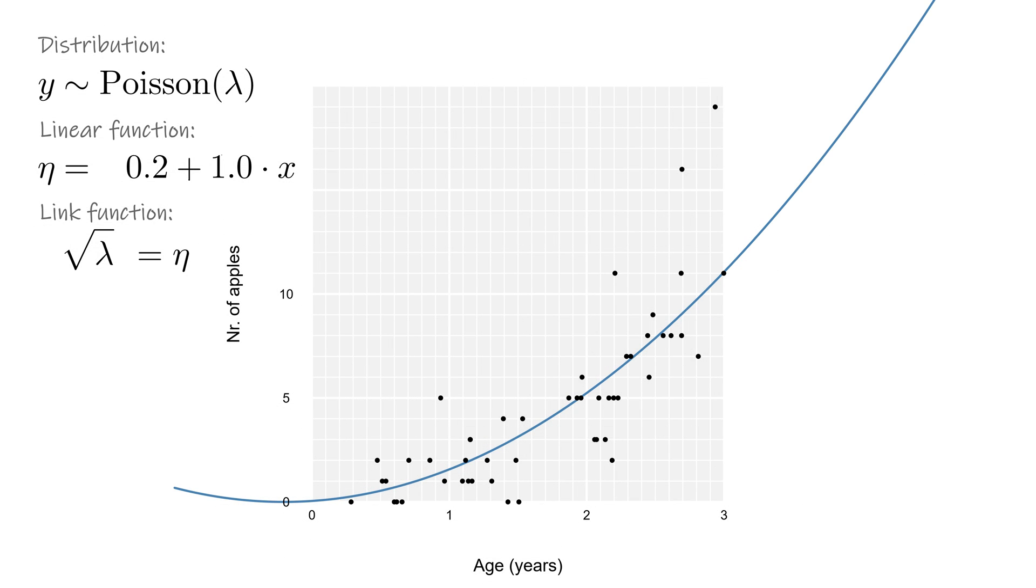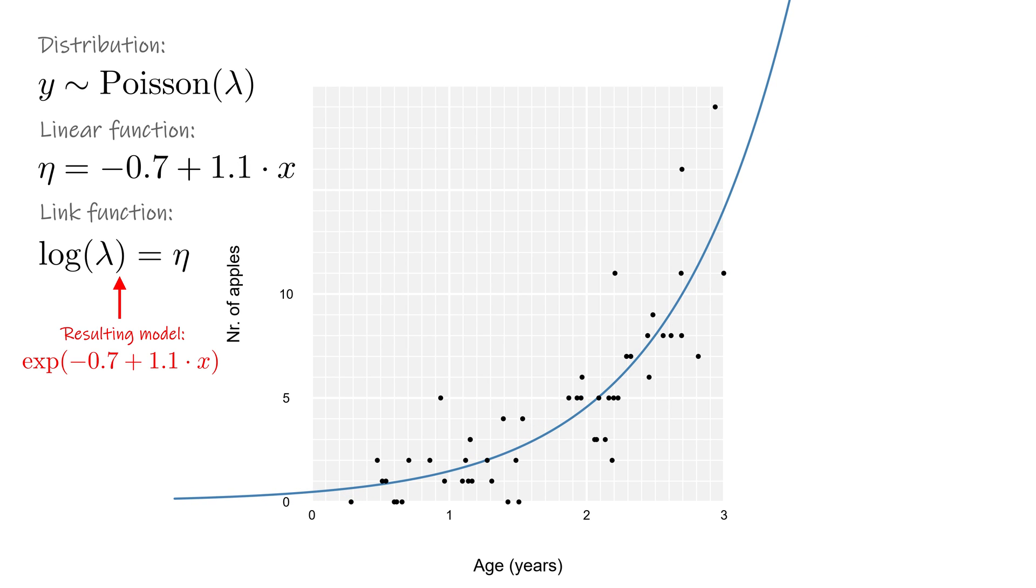For the Poisson distribution, the canonical link is the logarithm of the rate lambda, which means we take the exponent of our linear predictor. That is why regression with a Poisson GLM predicts an exponential relationship between the outcome and the explanatory variable. At least, if we use the canonical link and no further non-linear terms.